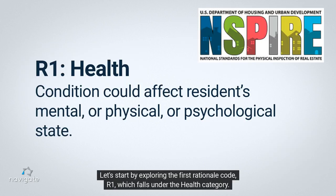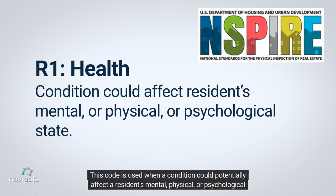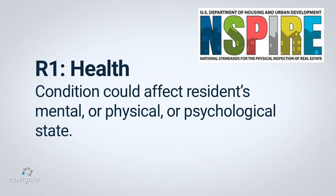Let's start by exploring the first rationale code, R1, which falls under the health category. This code is used when a condition could potentially affect a resident's mental, physical, or psychological state. It is crucial to address such issues in order to maintain a safe and healthy living environment for everyone.